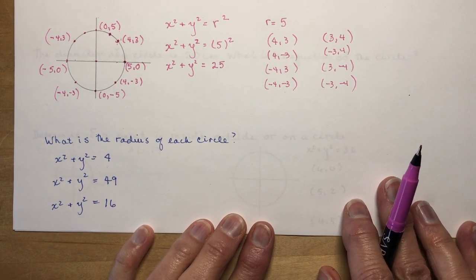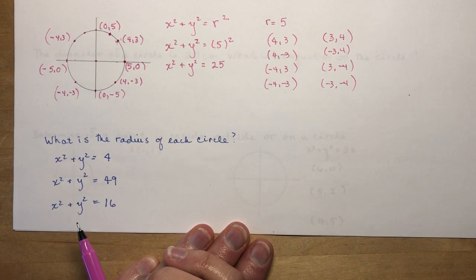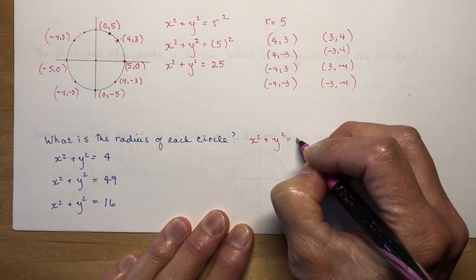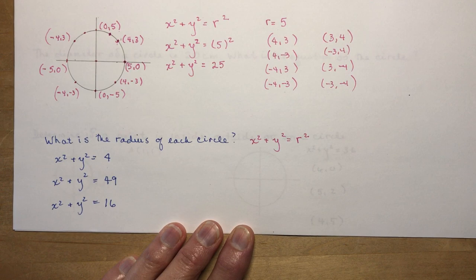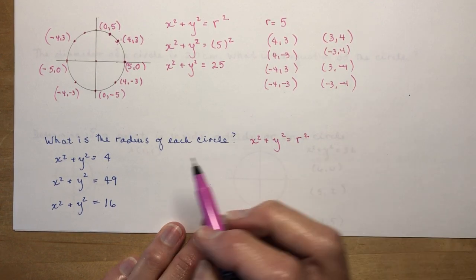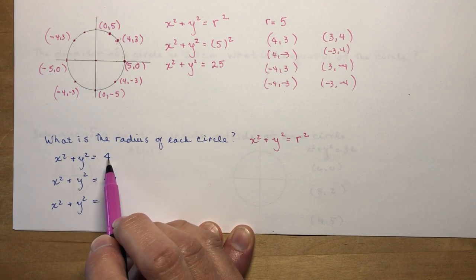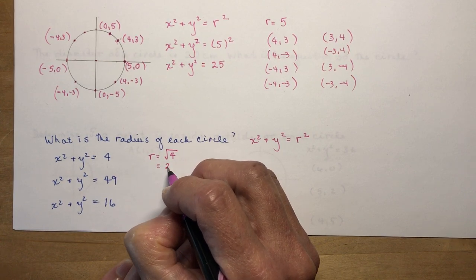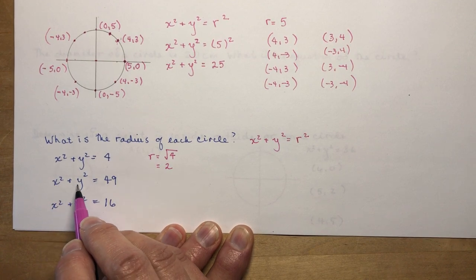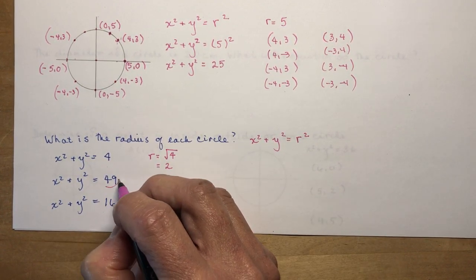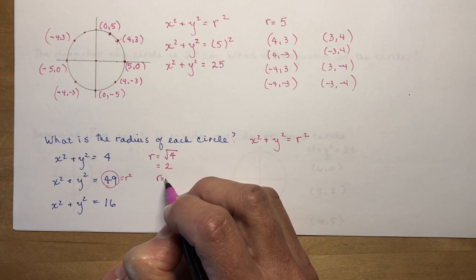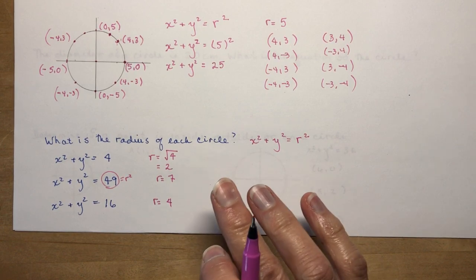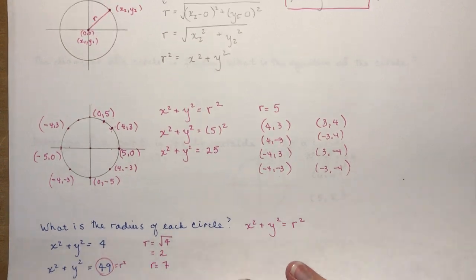Let's take a look at some questions you might be asked: what is the radius of each of these circles? When you go to do a test question, write out the equation you know. If this is x², this is y², and this is R², what does R equal? R equals the square root of 4, which is 2. What is the square root of 49? R is 7. And R would be the square root of 16, which is 4. So x² + y² = R² — no excuse for not getting a good mark on this unit test.